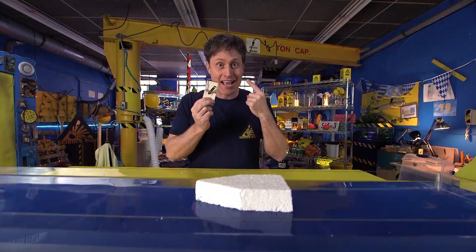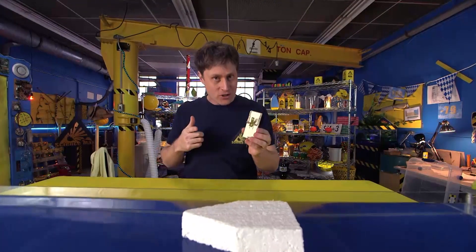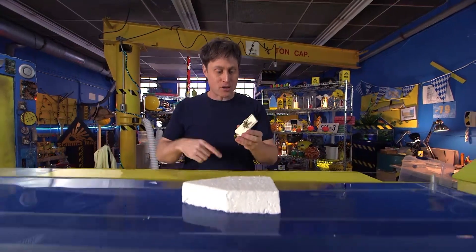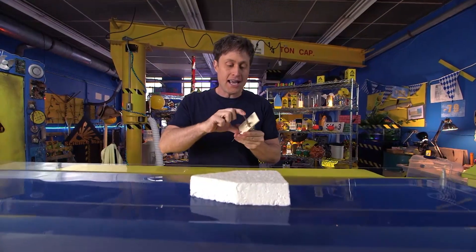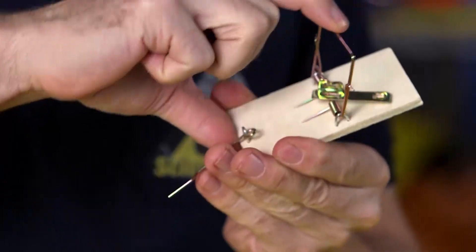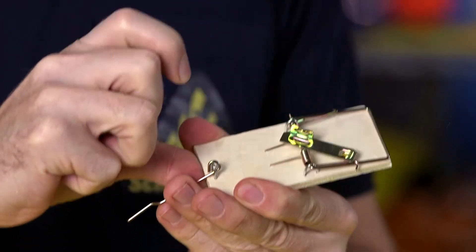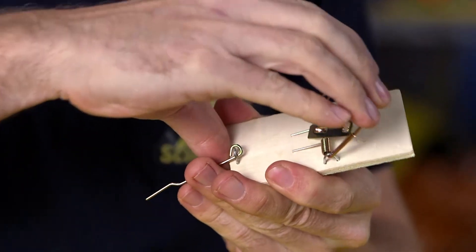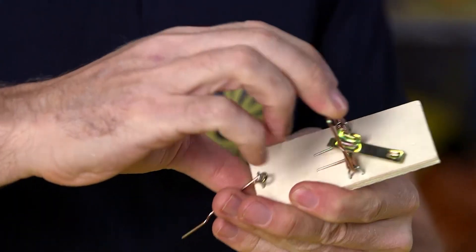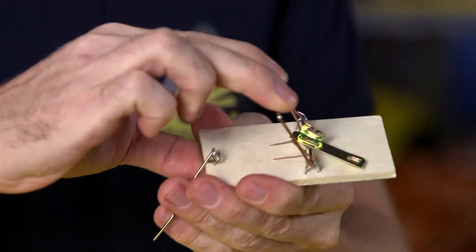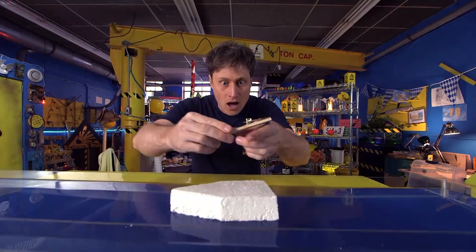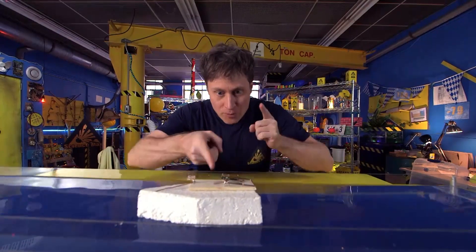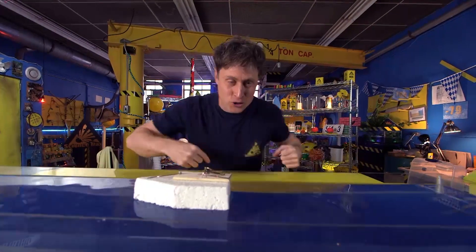Anyway we're going to be using a mousetrap and don't worry no mice are going to be harmed in the making of this or any Science Max episode but mousetraps are really great because they can store energy in the spring. If you see there's a spring that makes this bar want to snap back but we can put energy into the spring and store it and then use that energy as it unwinds the spring to propel our boat but it's a little more complicated than just this so come on I'll show you.